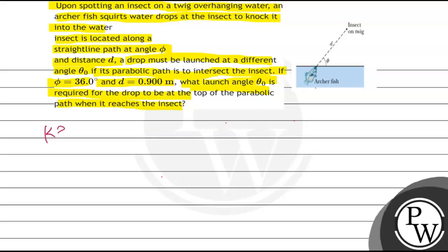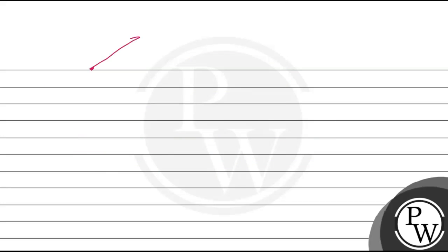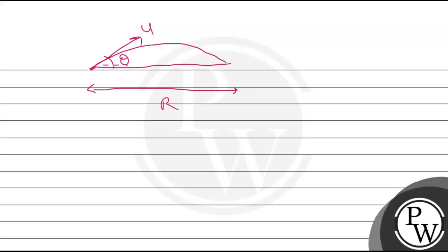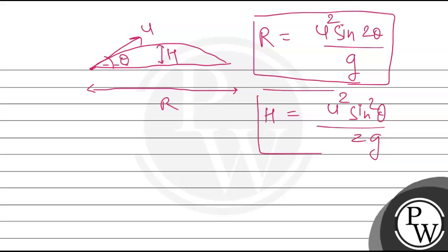The key concept involved here is projectile motion. We are going to use some standard formulas for the range and the height of projectile motion. If a particle is projected with initial velocity u at an angle theta with the horizontal, the formula for range is R = u² sin(2θ) / g, and the formula for height is H = u² sin²(θ) / 2g. These are the two standard formulas we are going to use to solve this question.